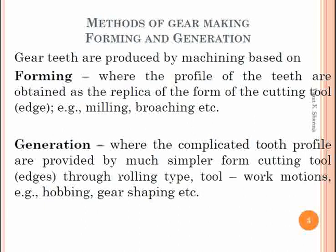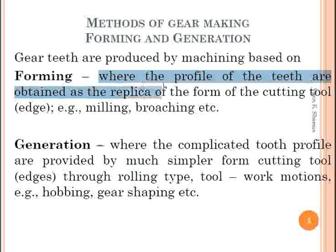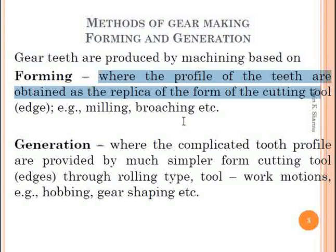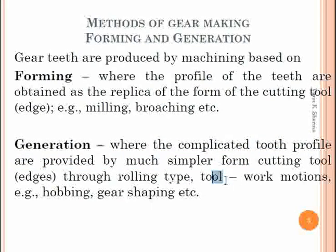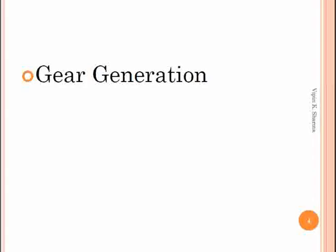For definitions: gear teeth are produced by machining based on gear forming processes and gear generation processes. Gear forming processes are those where the profile of the teeth is obtained as a replica of the form of the cutting tool — for example, form milling and broaching. Gear generation processes are those where the complicated tooth profile is provided by a much simpler form cutting tool through rolling-type tool and work motions — for example, gear shaping and gear hobbing.